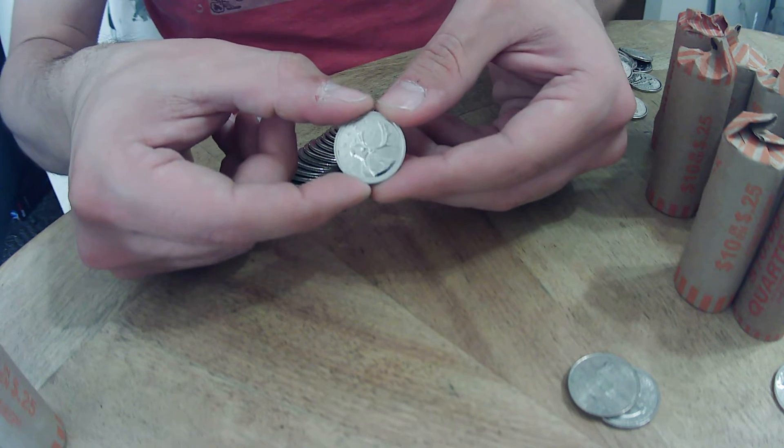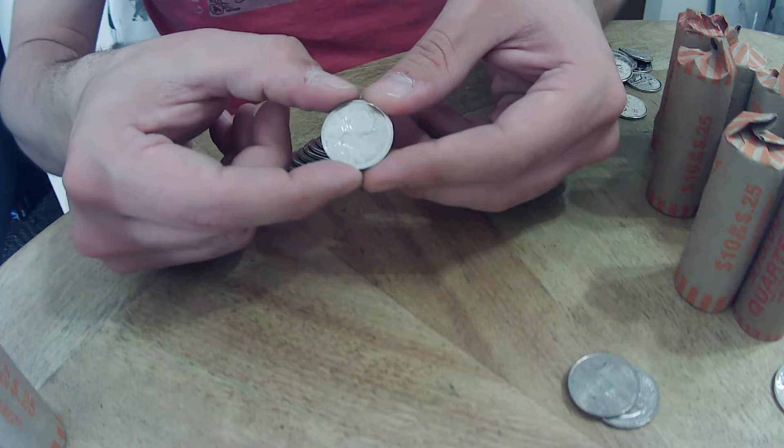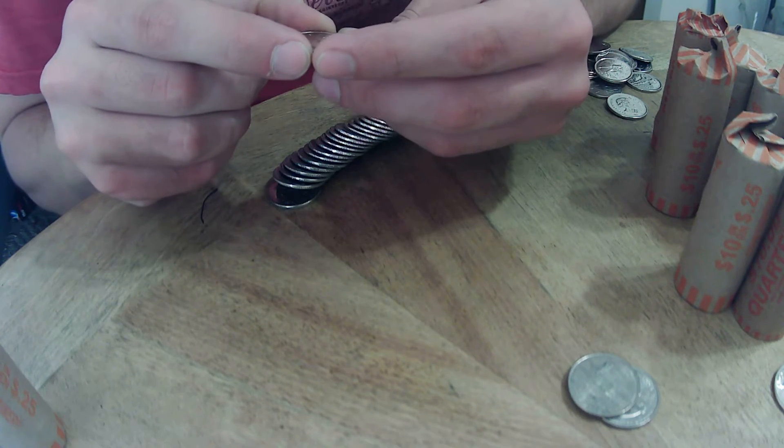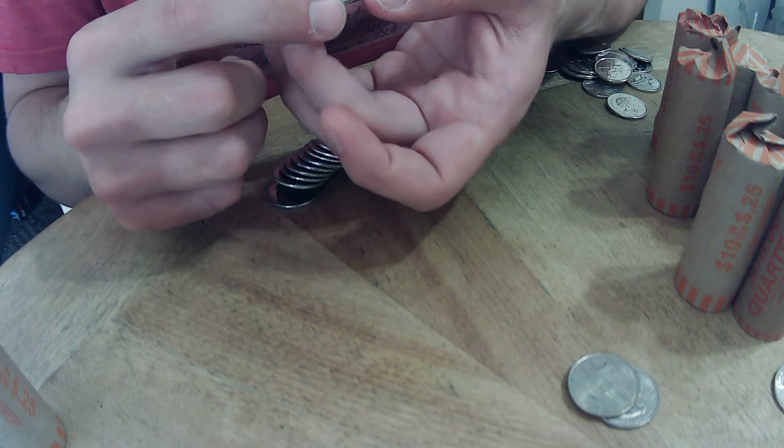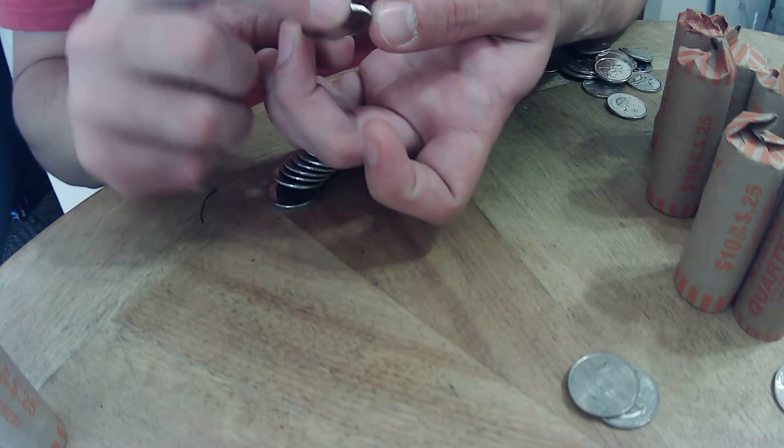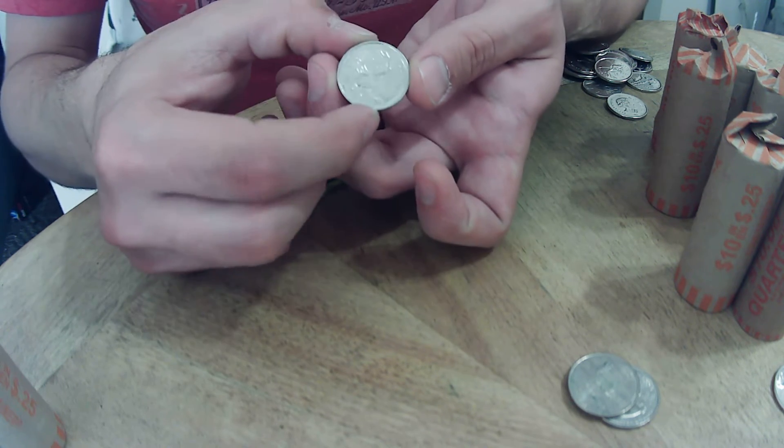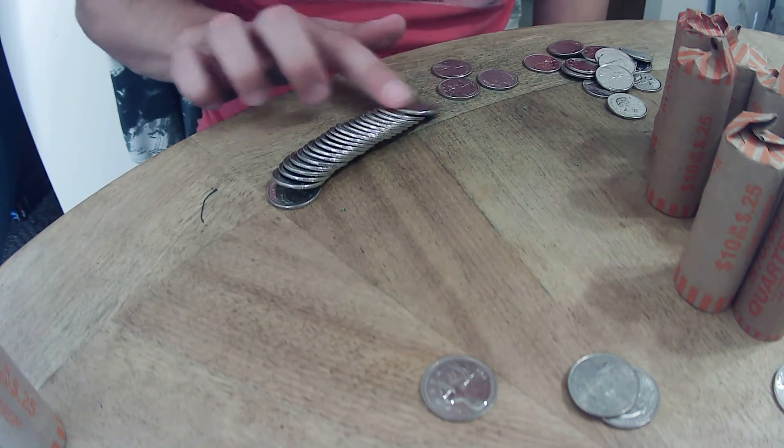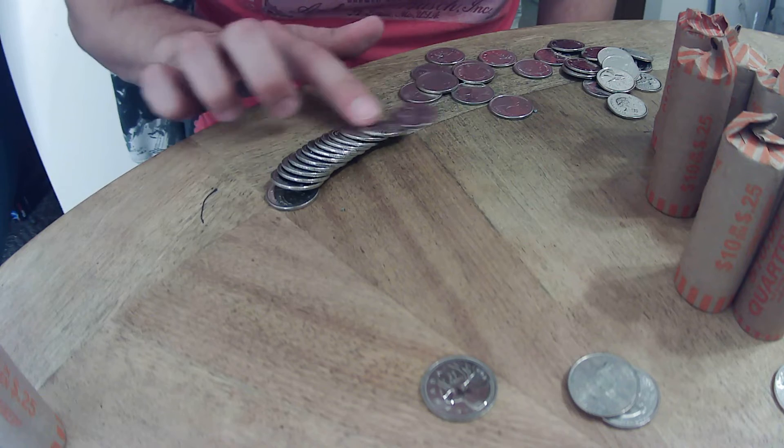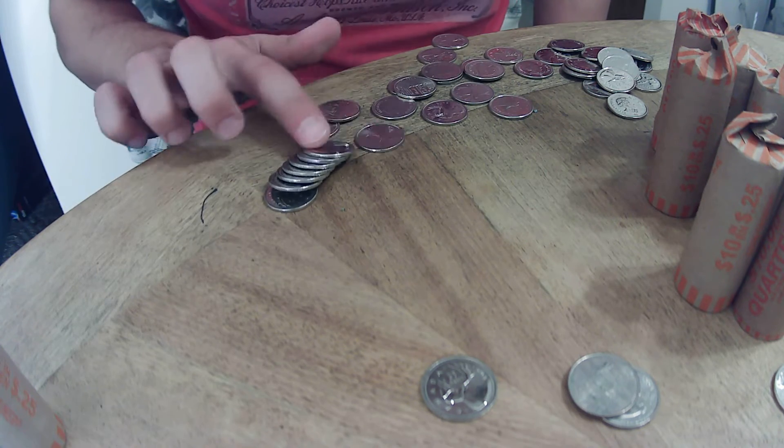1998 quarter, wow that is amazing! I've heard people finding 97s, 98s, and 99s. I was actually talking to somebody about that, but yeah, I found a matte 98 quarter. Wow, I literally flipped that over and was like, man, that edge looks super sharp.